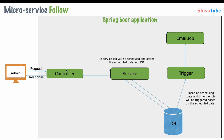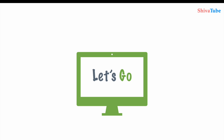This is the microservice flow. As an admin, I send a request to the controller in the Spring Boot application. The endpoint is triggered, and the service schedules the job and stores the scheduled data into the database. Based on the scheduled date and time, the trigger fires an email job. When the endpoint is triggered, the job is scheduled, data is stored in the database, the trigger picks that data, and one email is sent from our application.